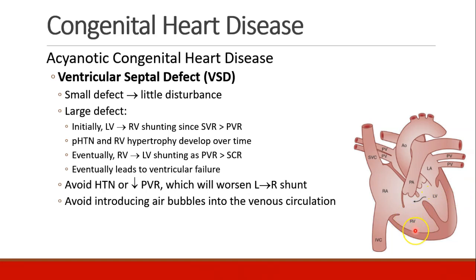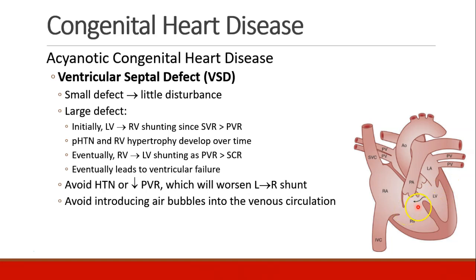With all the excess blood on the right side, patients start to develop pulmonary hypertension and right ventricular hypertrophy. Eventually this becomes so severe that you start to get right to left shunting, because pressures get so high in the right ventricle, and eventually this leads to ventricular failure. Similar to ASDs, we want to avoid hypertension or decreased pulmonary vascular resistance, and we still want to avoid introducing air bubbles into the venous circulation.